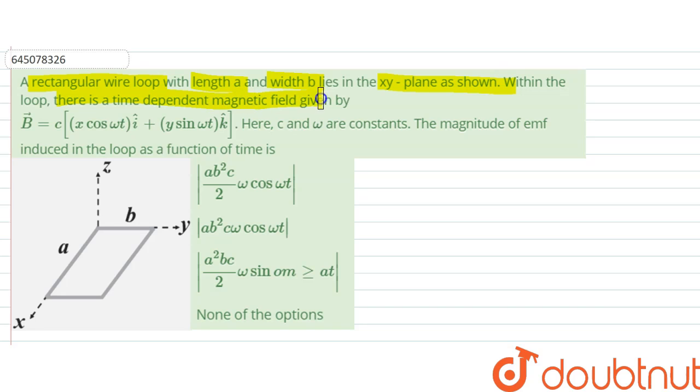Within the loop, there is a time independent magnetic field that is given by this. We are seeing c and omega are constants. The magnitude of EMF induced in the loop as function of time is what?